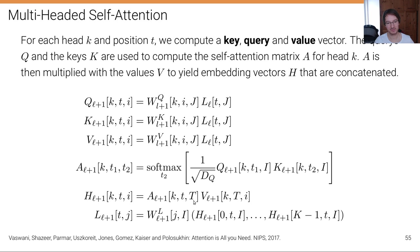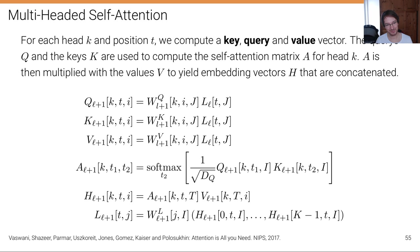This gives us 64-dimensional vectors h for each position and each head. We concatenate them across the different heads — from head 0 up to head k-1 — and then compute a matrix product to get the output of that layer. In summary: we compute queries, keys, and values for each head and each time step; from queries and keys we compute attention; that attention is multiplied with the values to extract the relevant values where the model attends; these are concatenated and fed to the next layer.